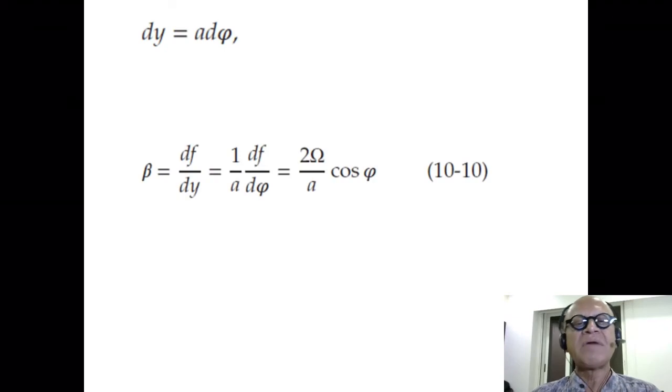So, remember dy in the latitudinal direction is just the radius of the earth times d phi, because cosine phi is, remember the A cosine phi. We can write it as A d phi for small change in latitude. Beta is df/dy because f is only a function of y. We can write it as df/dy instead of the partial. That's 1 over A df/dy, df/d phi, because we are replacing dy with A d phi.